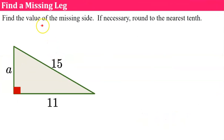Now let's find a missing leg. We don't always solve for the hypotenuse. Sometimes we're missing a different side. And again, if necessary, we will round to the nearest tenth. So I know that this is a leg because a and 11 form the right angle. Across is 15. This is my hypotenuse.